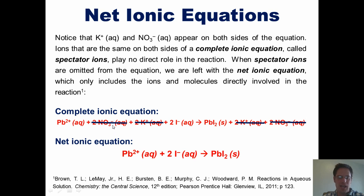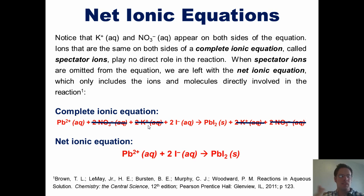The other ions — the nitrate and the potassium — as soon as you throw them in the water, they just dissolve and they never get together to form a precipitate. Because any time they attempted to get together, they would just re-dissolve, since they form a compound that is completely soluble in water.